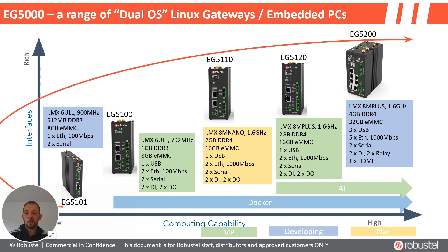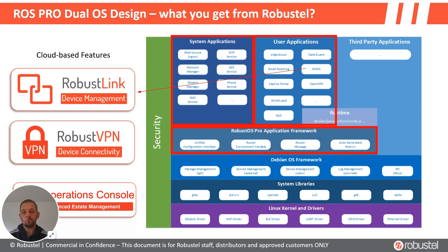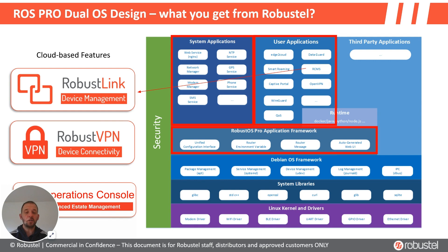Importantly, they're all ARM-based and all running Debian Linux. They're all what we refer to as dual OS — dual operating system. This is probably one of the most important differentiators about the EG5000 series. The R&D team at Robustel HQ have taken an in-house router operating system and turned it into a Debian package, running it effectively as an application on top of Debian itself.